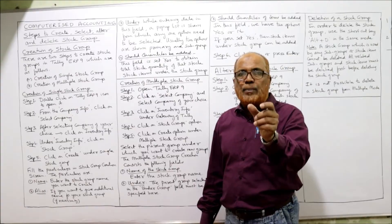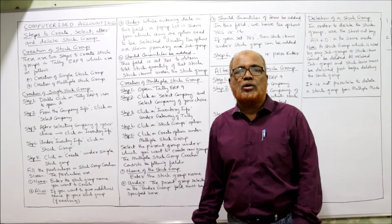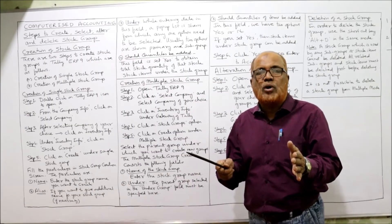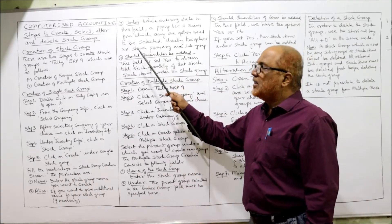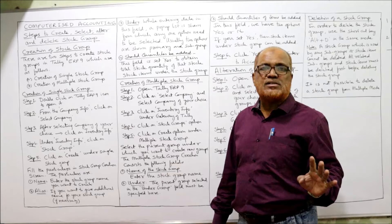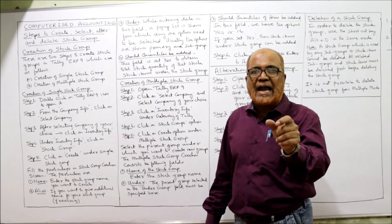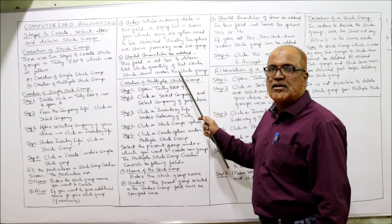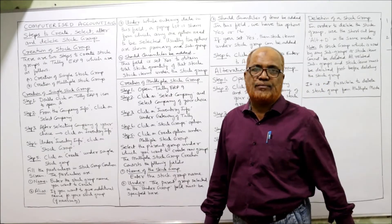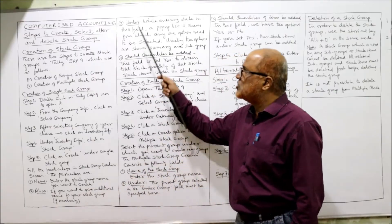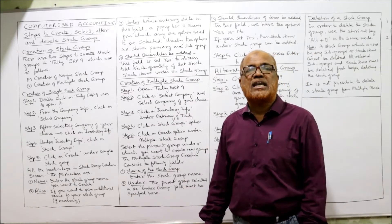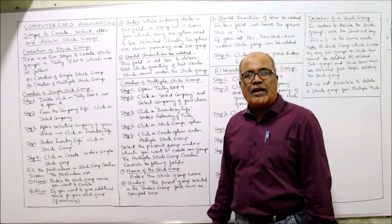In the Under field, a pop-up window will appear with two options: Primary and Subgroup. You have to decide whether you want to create a primary stock group or make it a subgroup. The next field on the screen is Should Quantities Be Added — Yes or No. Normally we select Yes. After filling up all these fields, your stock group is created under single mode.